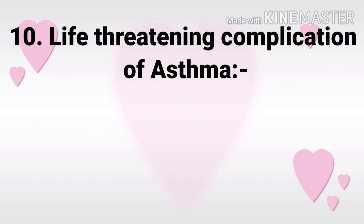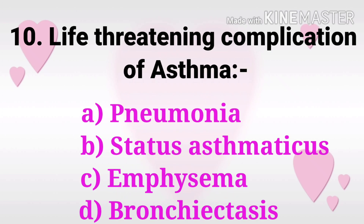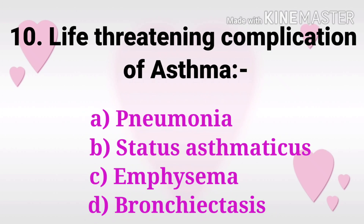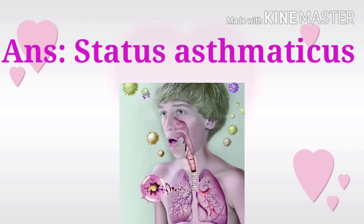Question 10: Life-threatening complication of asthma? The options are pneumonia, status asthmaticus, emphysema, and bronchiectasis. The answer is status asthmaticus, commonly known as acute severe asthma or asthma exacerbation. It refers to an asthma attack that does not improve with traditional treatment such as inhaled bronchodilators.